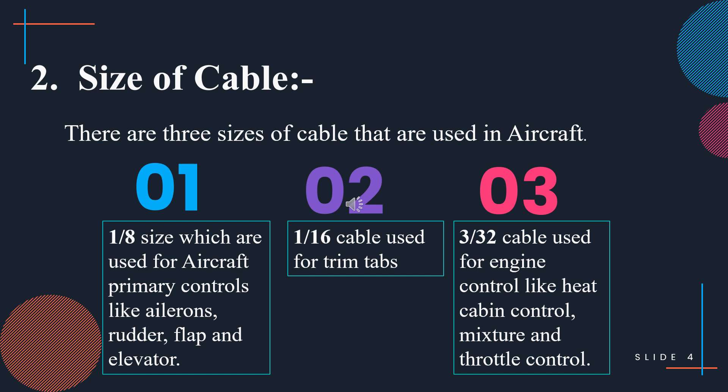There are three cable sizes used in aircraft systems. Size one is 1/8 inch diameter cable, used for primary controls like ailerons, rudder, elevator, and flaps. Size two is 1/16 inch diameter cable, used for trim tabs. Size three is 3/32 inch diameter cable, used for engine controls like heat, cabin control, mixture, and throttle.